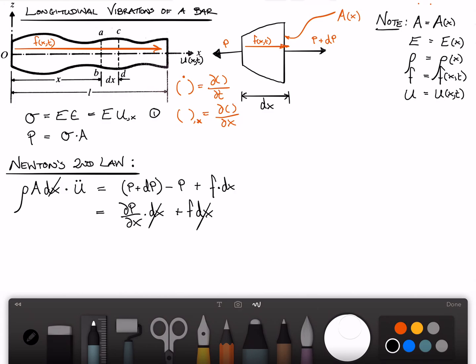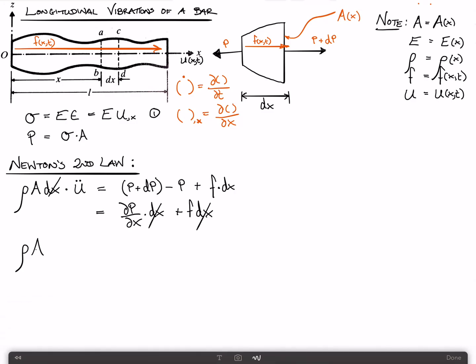Your dx's cancel. And what you're left with is rho times A times u double dot is equal to d by dx. And then we go back to equation 1, which says that p, which is sigma A, is E A u comma x plus f. We'll call this equation 3. This is the equation of motion.